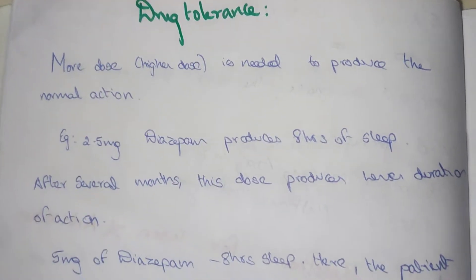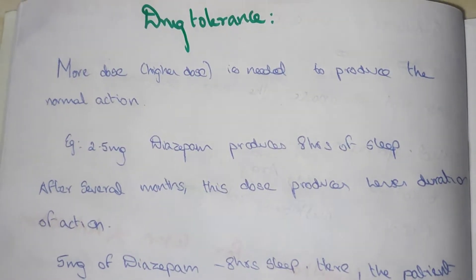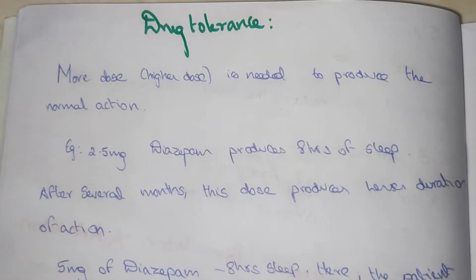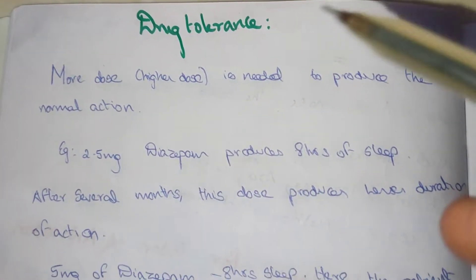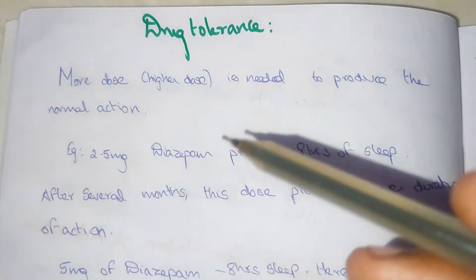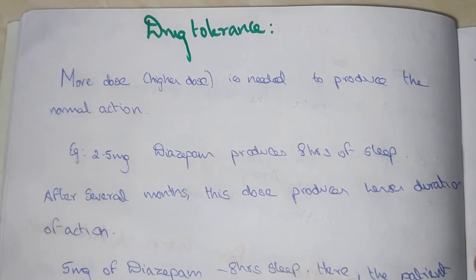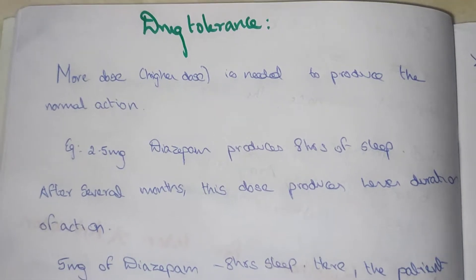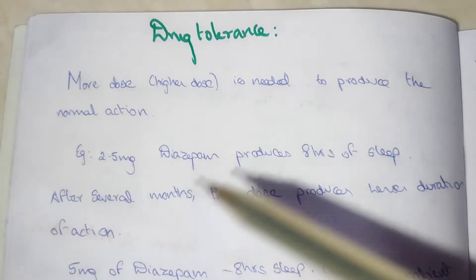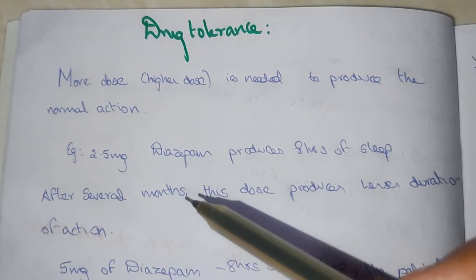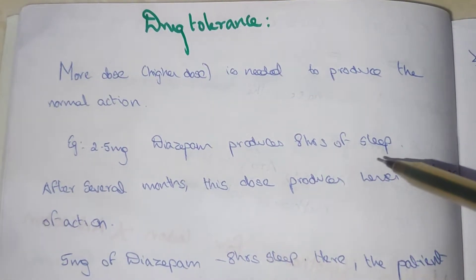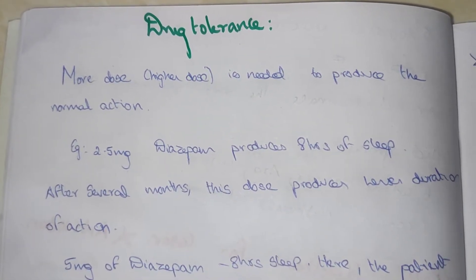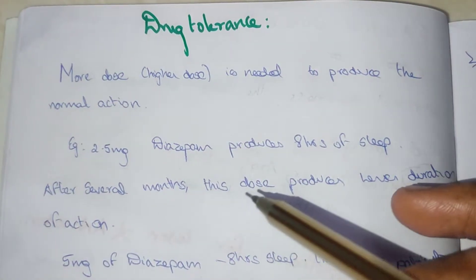Hi everyone, welcome to Medicine YouTube channel. In this video we are going to see about drug tolerance. This is an important topic in pharmacology. More dose is needed to produce a normal action, and the body produces a tolerance effect against a minimum dose. We require more dose to produce the particular action. For example, 2.5 milligram of diazepam normally produces eight hours of sleep.